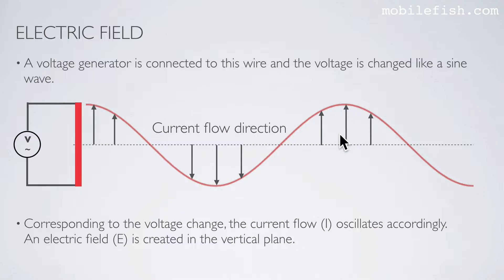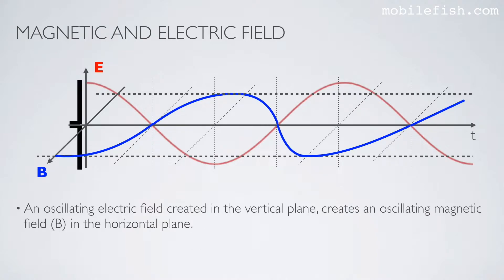An electric field indicated by the letter E is created in the vertical plane. An oscillating electric field created in the vertical plane creates an oscillating magnetic field indicated by the letter B in the horizontal plane. The magnetic field is orthogonal, meaning 90 degree angle, to the electric field.